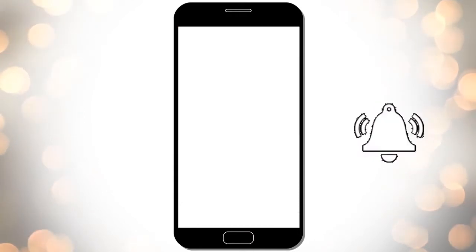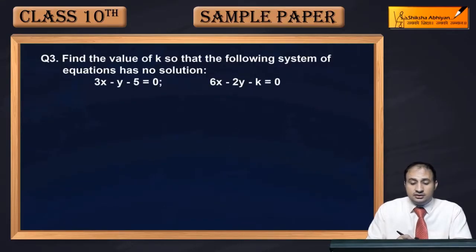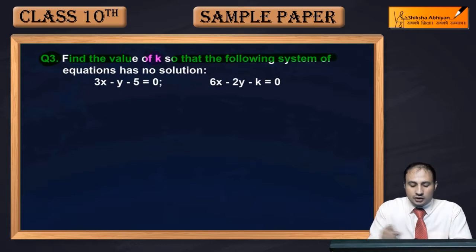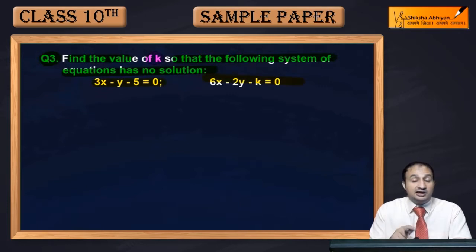Question 3 is find the value of k so that the following system of equations has no solution. The system of equations is 3x - y - 5 = 0 and 6x - 2y - k = 0.